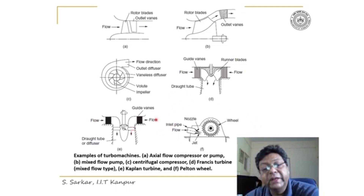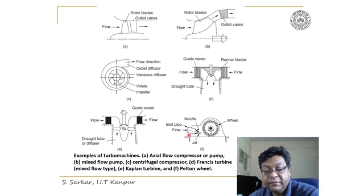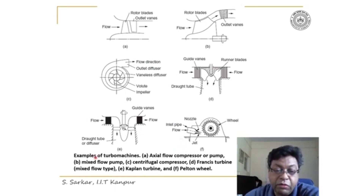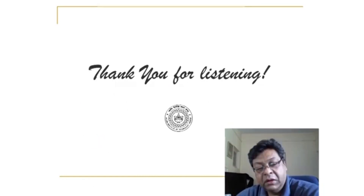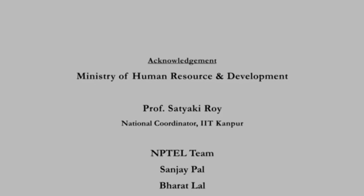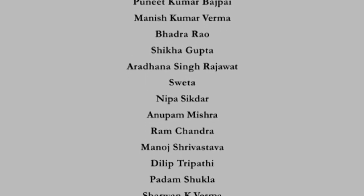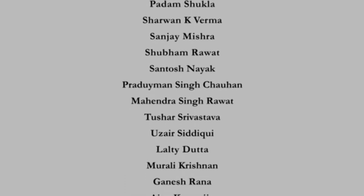This is a primitive machine — the Pelton wheel — which is a combination of a rotating wheel and a nozzle. The Pelton wheel is an impulse turbine, whereas the Kaplan is a reaction turbine. I will discuss the construction of each machine in detail in the next session. Thank you for listening.